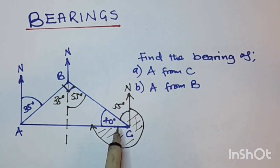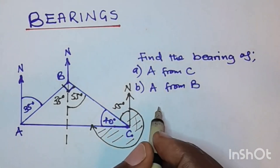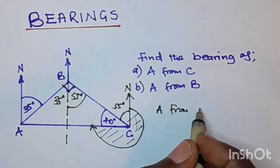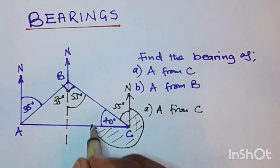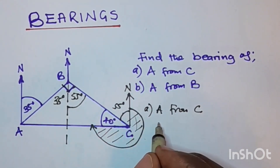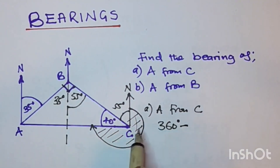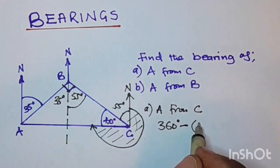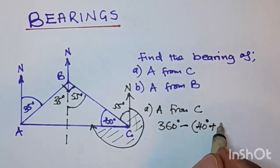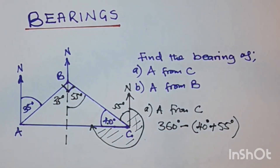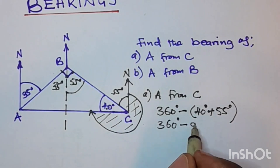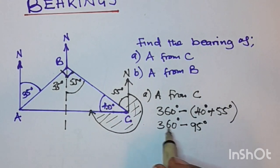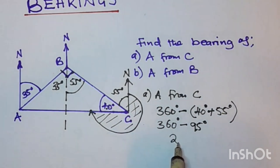For us to find this bearing we are going to say: 360, which is the full turn, minus 40 degrees plus 55 degrees. So 360 minus (40 + 55), which is 360 minus 95 degrees. When we subtract 95 from 360 we get 265 degrees. So the bearing of A from C is 265 degrees.